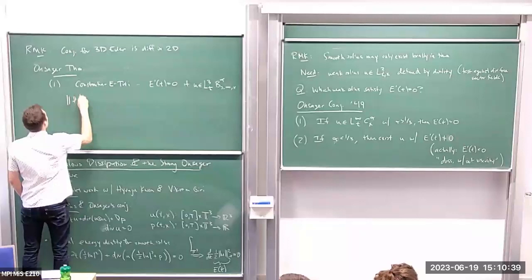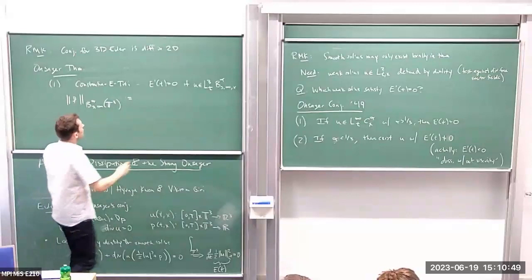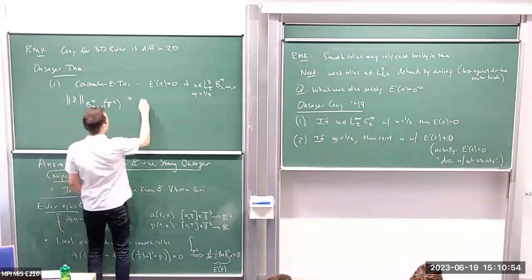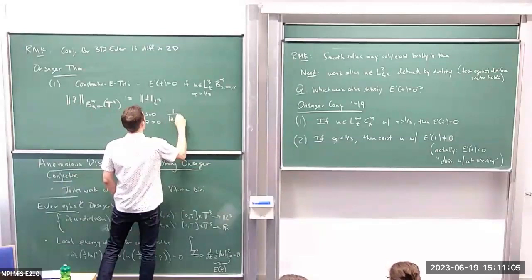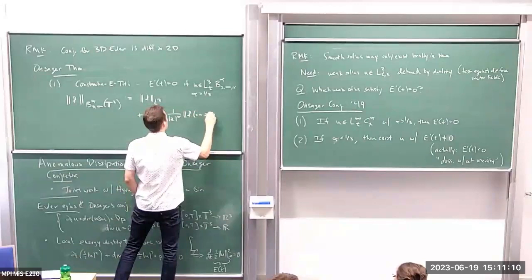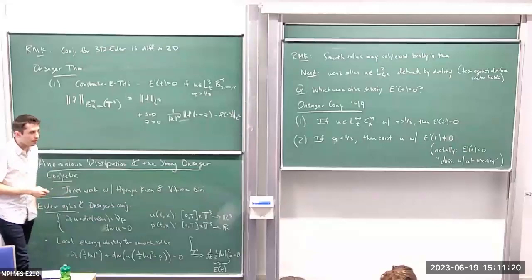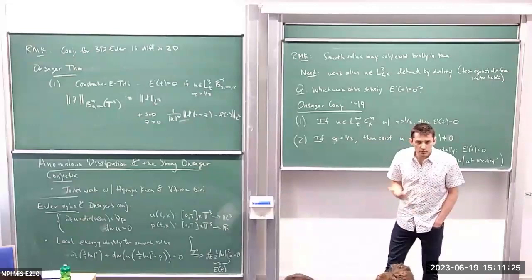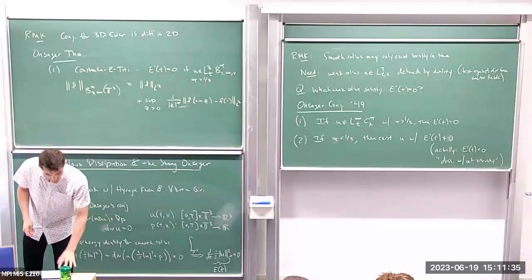The Besov space B^alpha_{3,∞} on the torus is the sum of the L³ norm plus the supremum over z greater than zero of one over z^alpha of the L³ norm of the translate of f by z minus f. So this is a difference quotient weighted by a fractional power of z — not the full power, which would give W^{1,3}, but this fractional difference quotient.